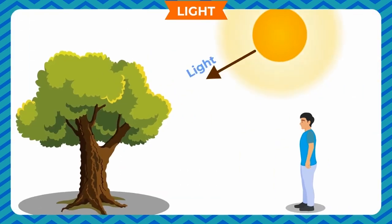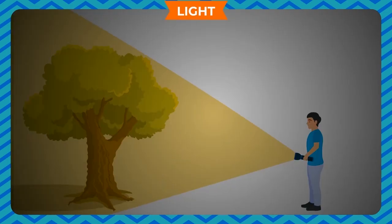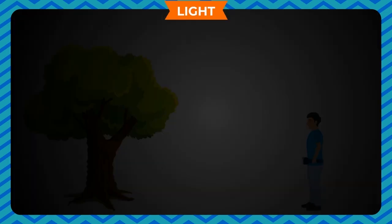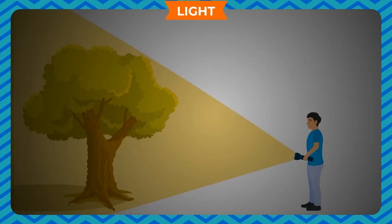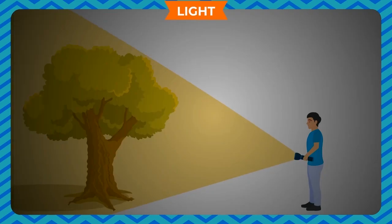When light falls on an object, it bounces off and reaches our eyes. Thus, we can see things due to reflection of light. On a dark night, we often use a torch to see things. The light from the torch falls on the things, reflects back to our eyes, and helps us to see the things.